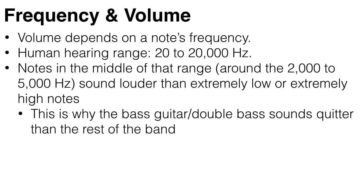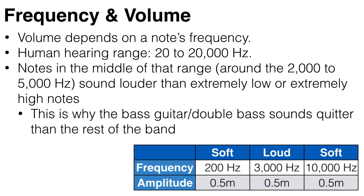So a note at a frequency of 3,000 Hz and an amplitude of 0.5 m will sound louder than a note with a frequency of 200 Hz and an amplitude of 0.5 m, and also louder than a note with a frequency of 10,000 Hz and an amplitude of 0.5 m.